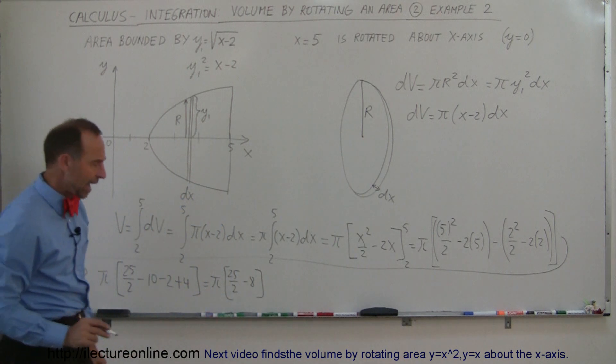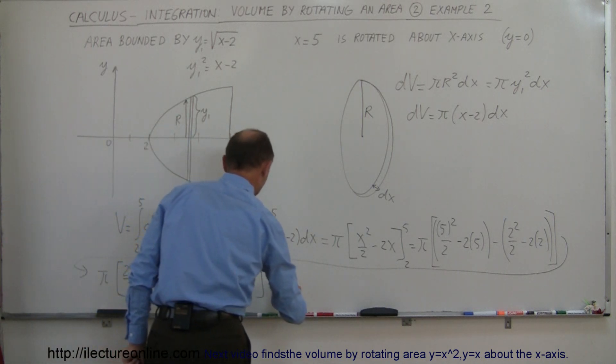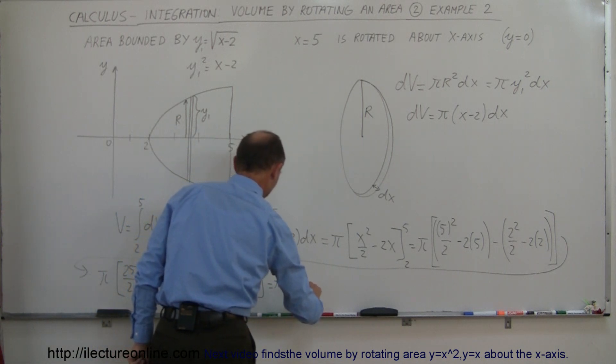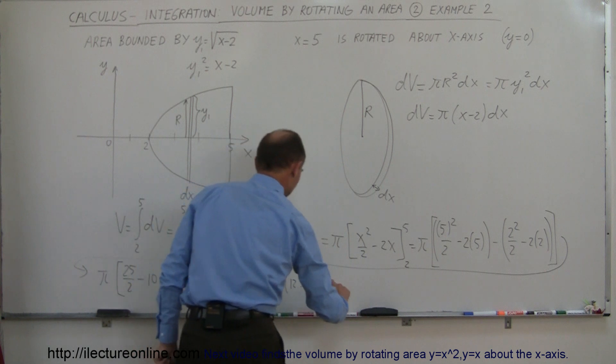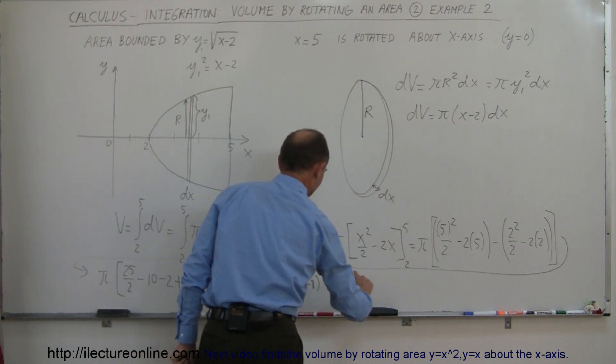Of course, 25 over 2 is 12 and a half, so this is equal to π times 12.5 minus 8, which is equal to 4.5π.